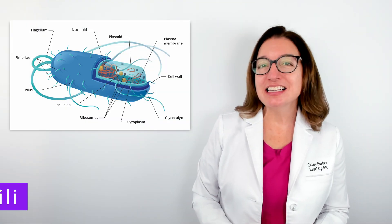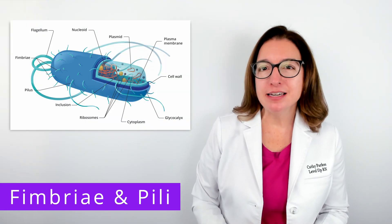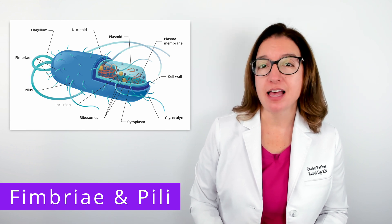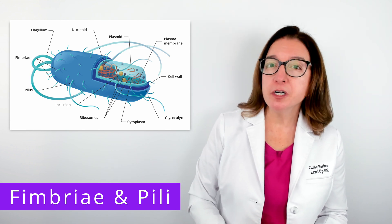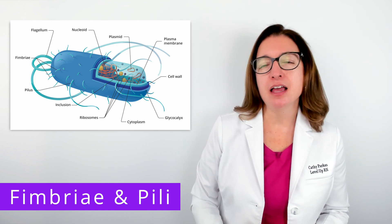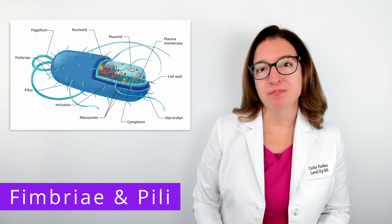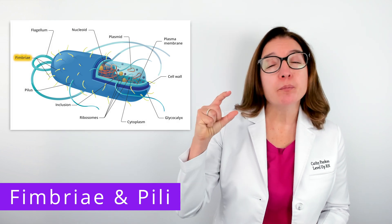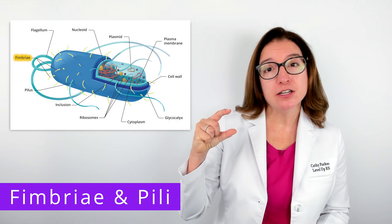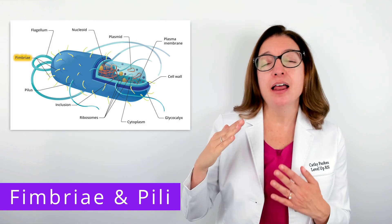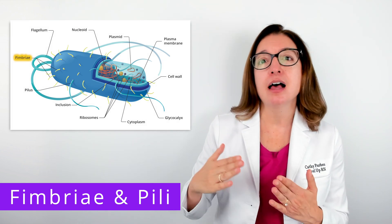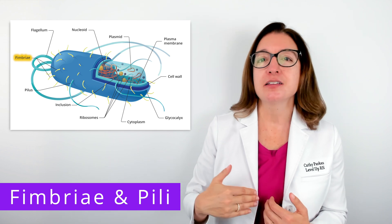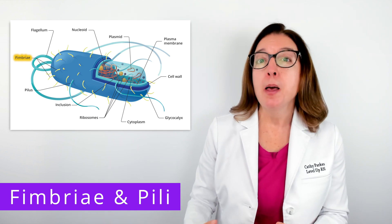Next, let's talk about appendages that some bacterial cells have, which include fimbriae, pili, and flagella. Fimbriae are short protein appendages that help the cell attach to surfaces, so they help with adherence.